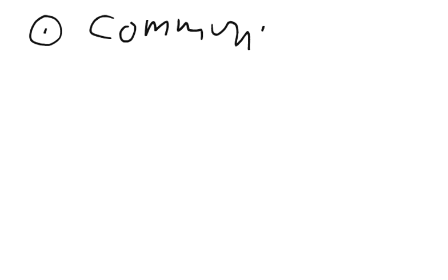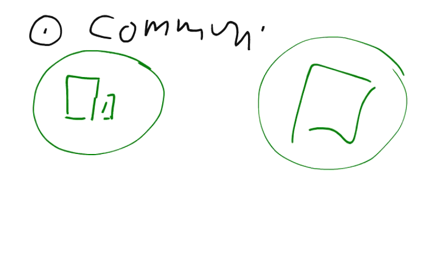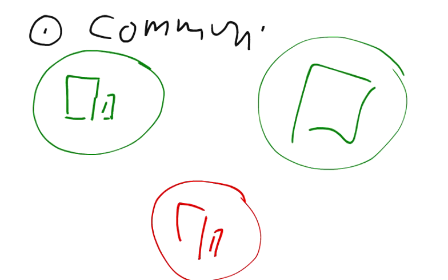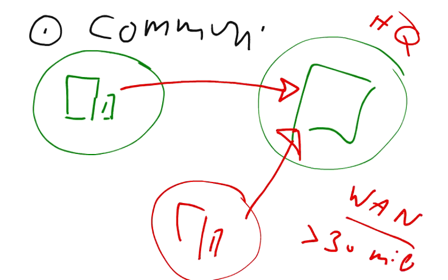Let us take an example. Let us suppose we have got two bank branches in one city, the headquarter of a bank in another city, and a branch of a bank in city number 3. Now all the branches would like to share information with the head office, so we can create a network between the branch offices and the headquarter. If the distance between them is greater than 30 miles, then this is an example of a WAN.